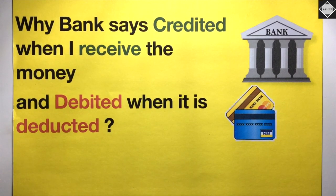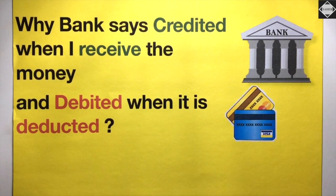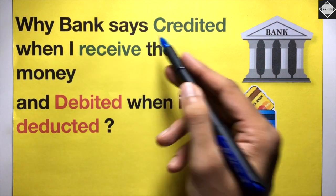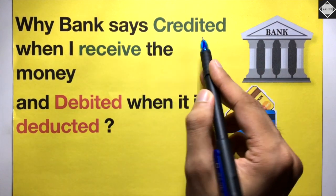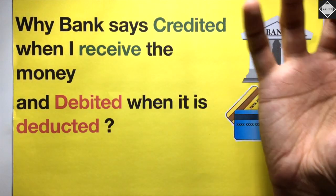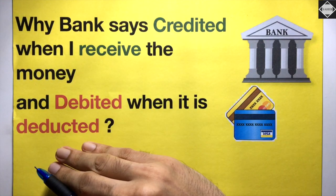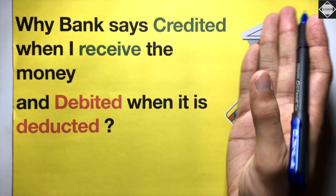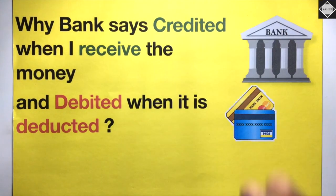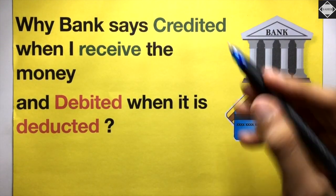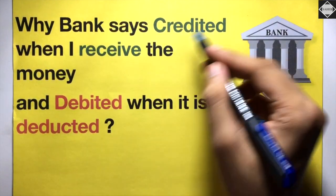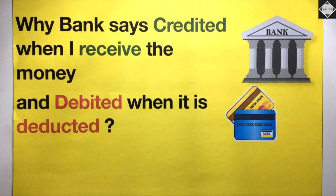Hi everyone, welcome back to Sahab Academy. Today in this video we are going to understand why our bank says 'credited' when we receive money in our account and 'debited' when the money goes out of our account. What is the reasoning behind this? I'm sure you must have seen these two terms in bank messages or in the banking app.